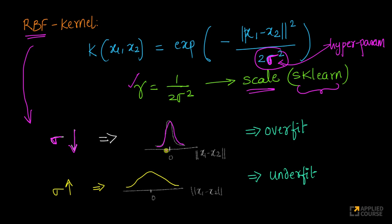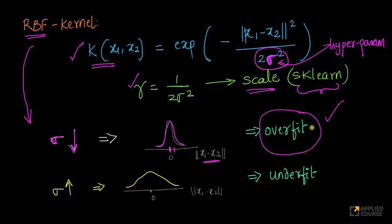When the kernel becomes narrow, only points which are very close together will be treated as similar points, because a kernel is fundamentally a similarity measuring function. If sigma is very small, only points with very small distance between x1 and x2 will be treated as similar. As sigma reduces, you tend to overfit the model to the given data.